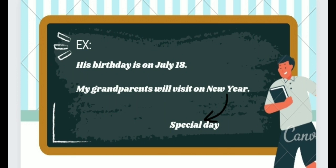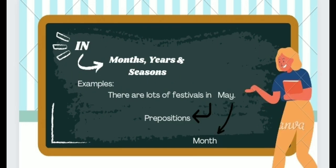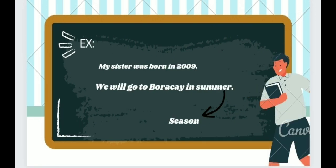Another example using 'on': 'My grandparents will visit on New Year' — the preposition is 'on' and the special day is New Year. 'In' is used when referring to months, years, and seasons. For example: 'There are lots of festivals in May' — the preposition is 'in' and the month is May.